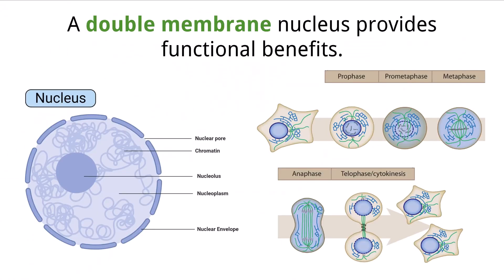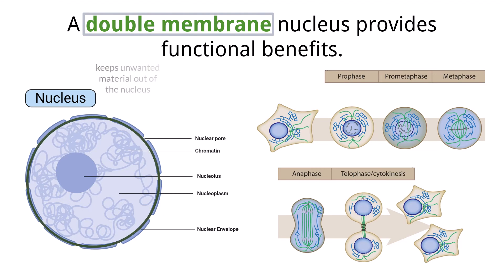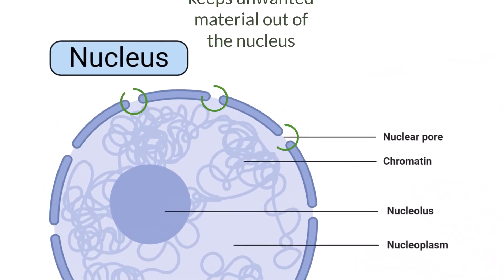In addition to the presence of the nucleus having an advantage over the lack of a nucleus, like we discussed in the SL video, the unique double membrane of the nucleus has other advantages. The nuclear membrane blocks many things from getting into the nucleus, but some components like enzymes used for transcription need to enter, and molecules like messenger RNA need to exit. The double membrane of the nucleus achieves this by creating relatively large pores for these components to move through via the fusion of the inner and outer layers of phospholipids.